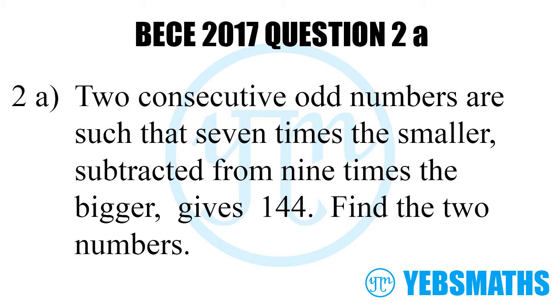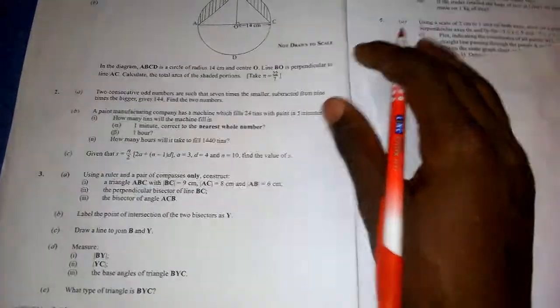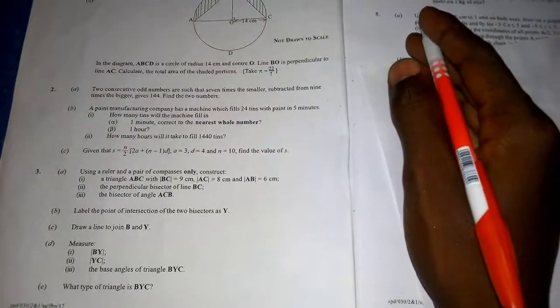The question is: two consecutive odd numbers are such that seven times the smaller subtracted from nine times the bigger gives 144. Find the two numbers. So if they are consecutive, that's one after the other.